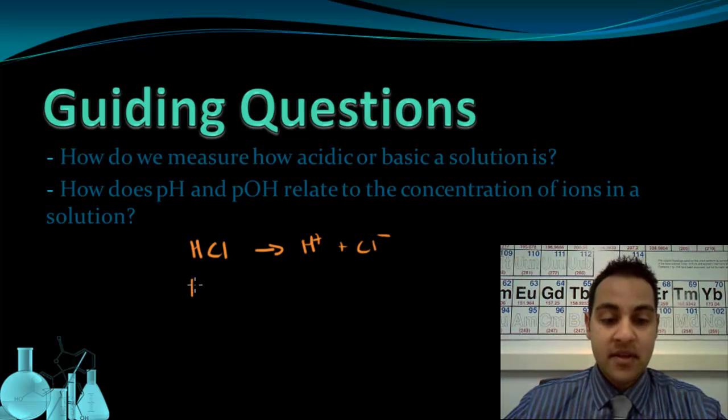Whereas a base, something like NaOH, is going to ionize to form Na plus ions and hydroxide ions, the OH minus ion. And according to Arrhenius,